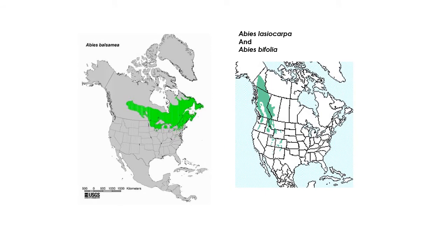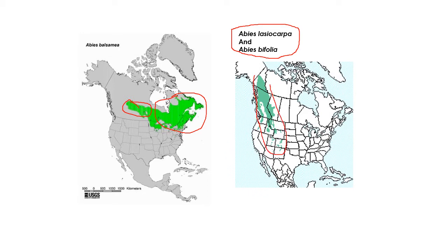Abies balsamea is balsam fir, mostly in eastern North America — Quebec and the northeastern United States, going a little bit into western Canada. Then we have two species that used to be lumped: they were all Abies lasiocarpa, but the genus has been split into Abies lasiocarpa and Abies bifolia. Lasiocarpa is generally found on the west side, and bifolia is found in the interior in drier sites.